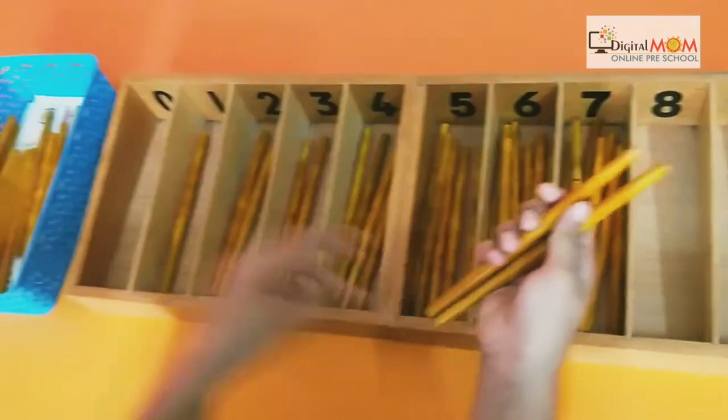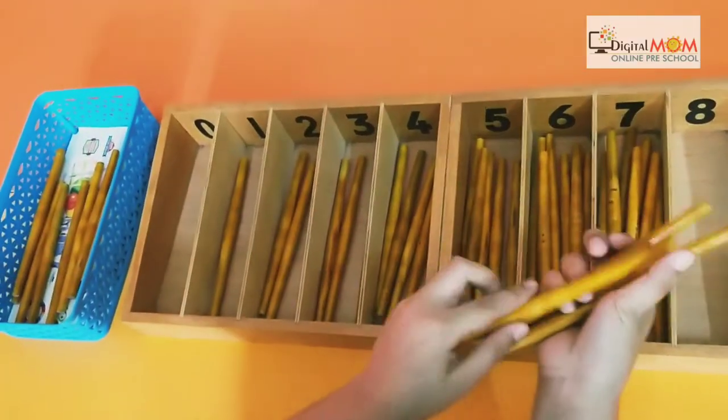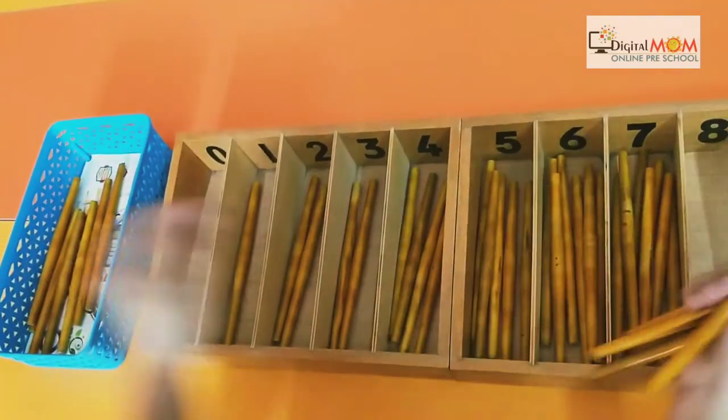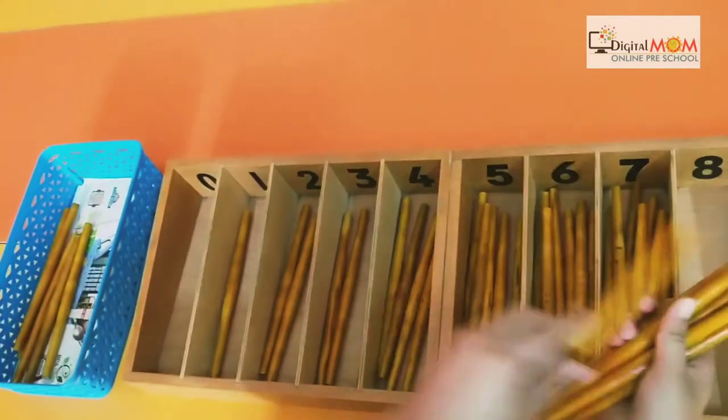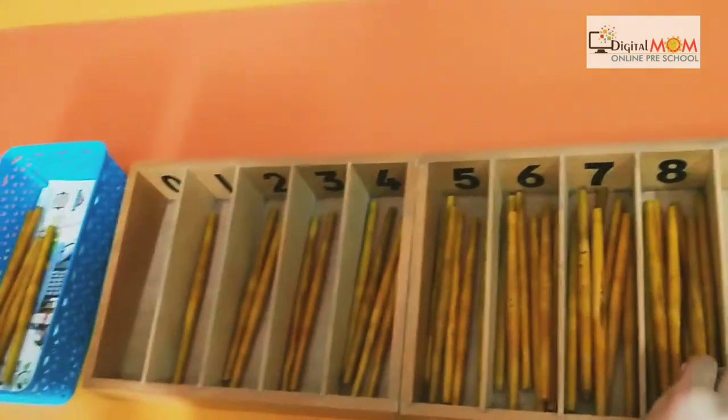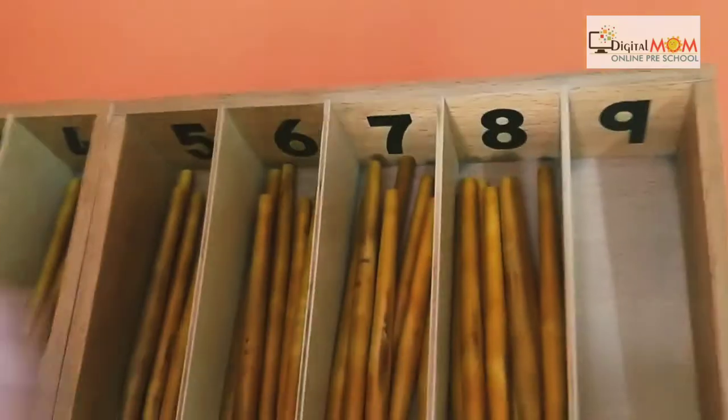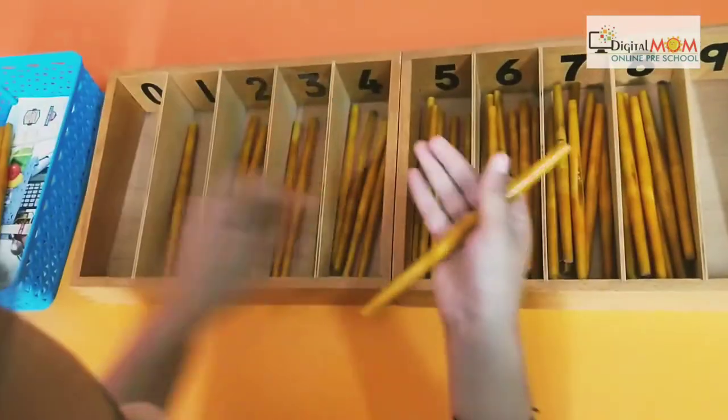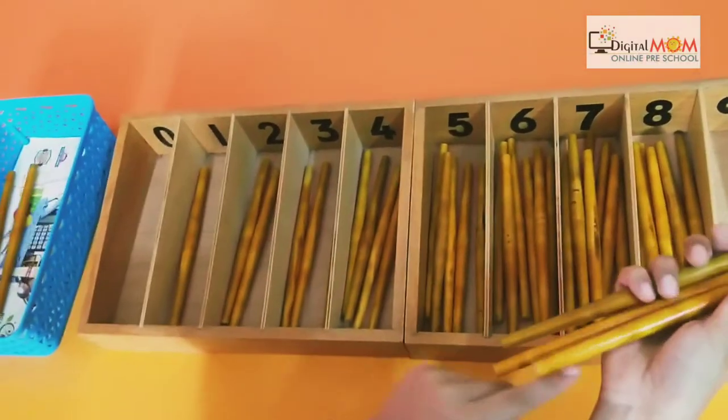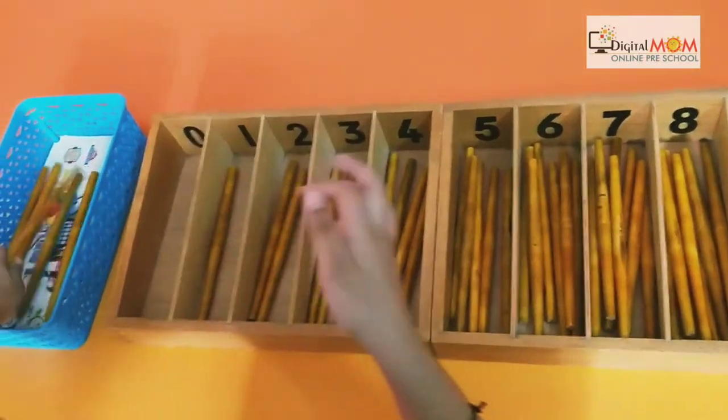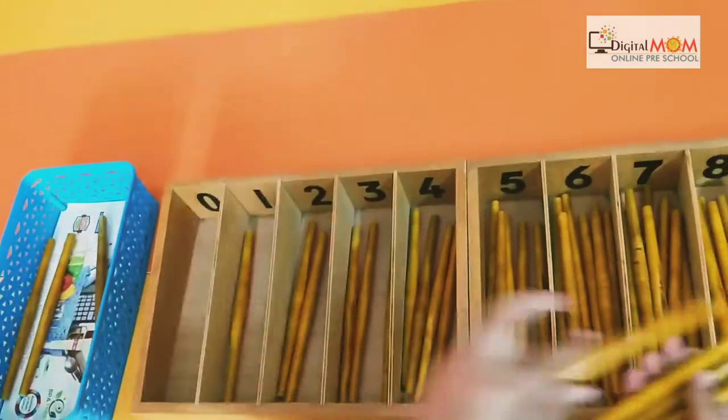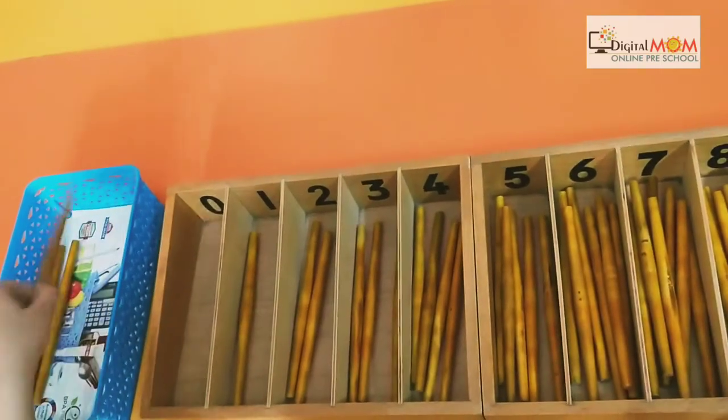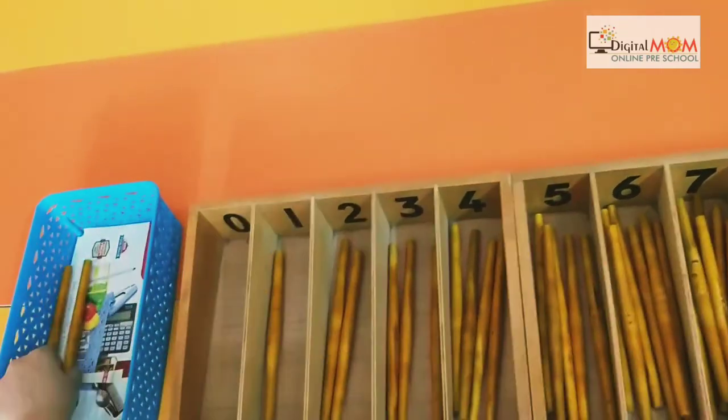Let's count: one, two, three, four, five, six, seven, and eight. Nice, put it in the box. Now the last number is nine. Count it - one, two, three, four, five, six, seven, eight, and nine. Very nice.